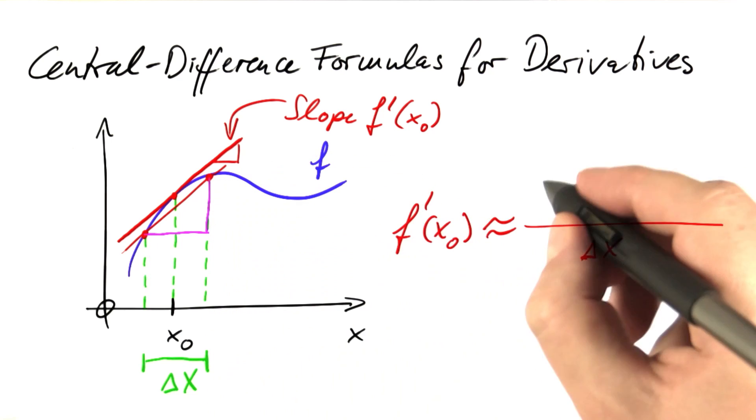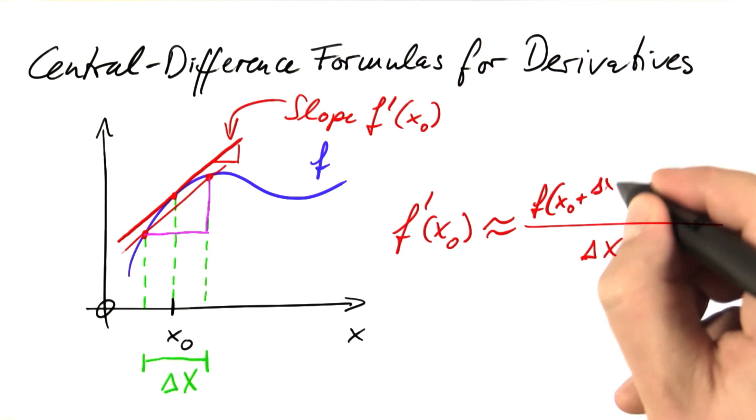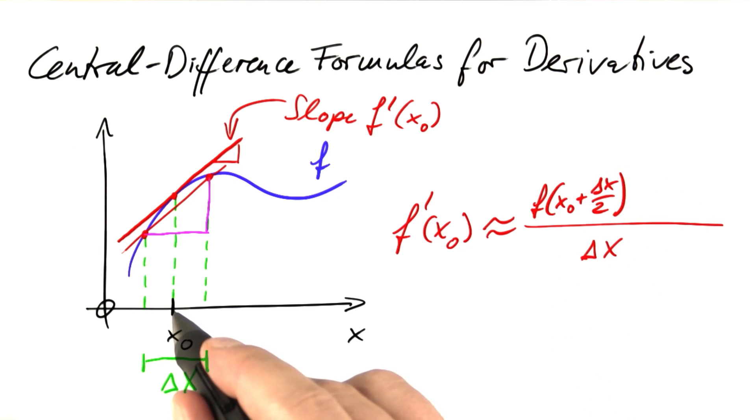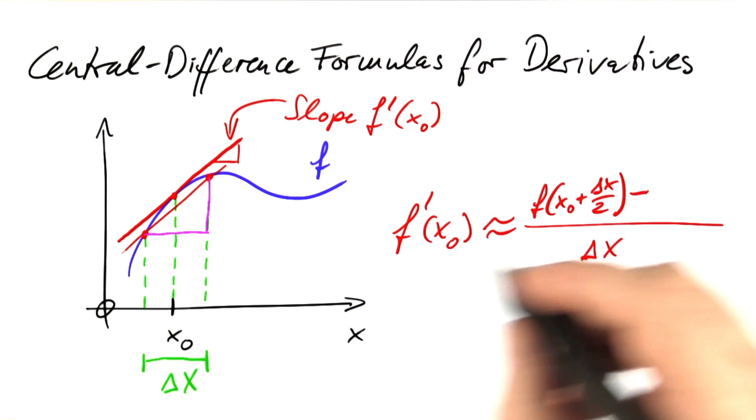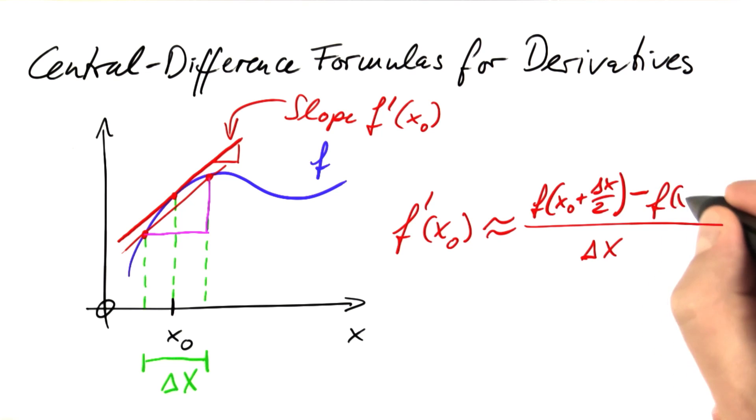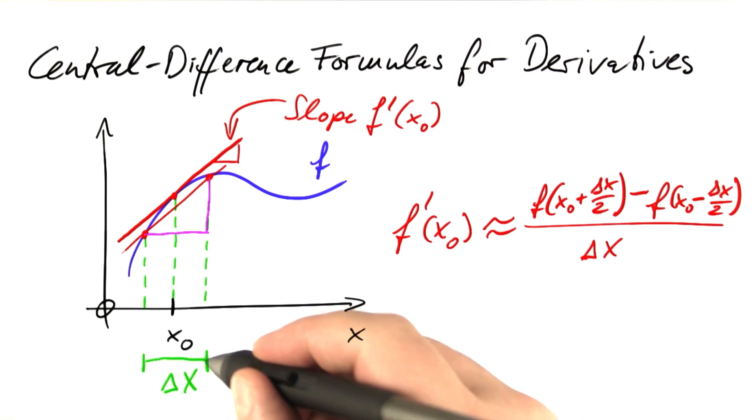So it's our function on the right-hand side, f of x0 plus delta x half. From x0, we're moving by half of this distance to the right, plus delta x over 2, minus the value of the function on the left-hand side, f of x0 minus delta x over 2. We're going to the left by half of the distance.